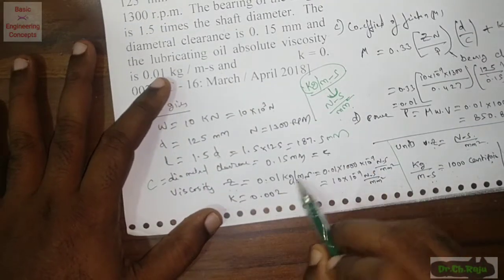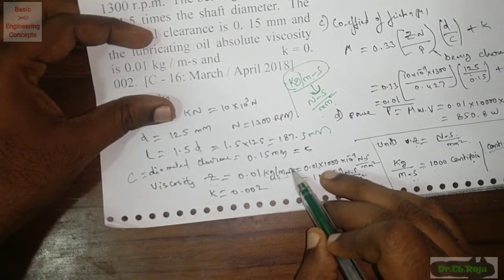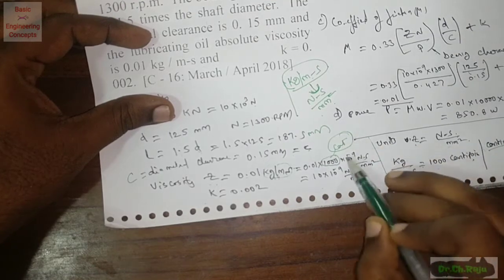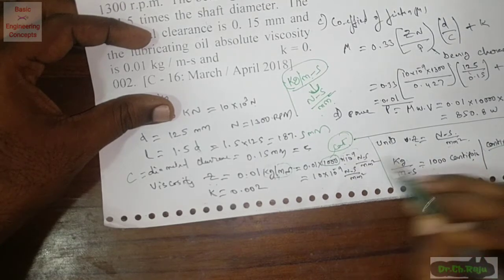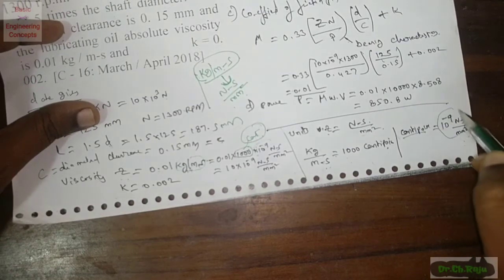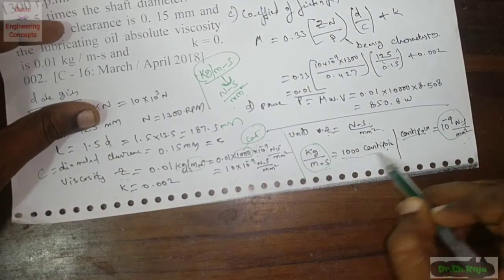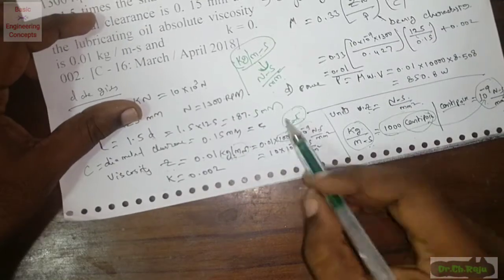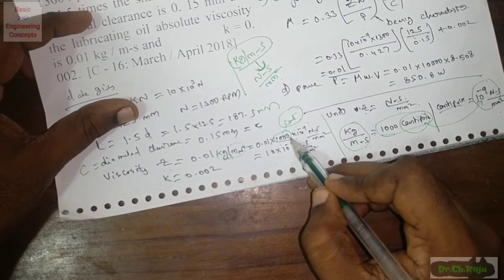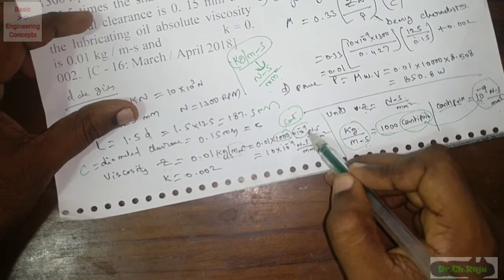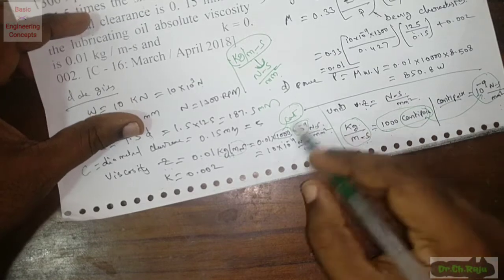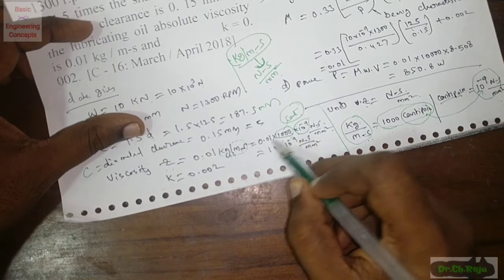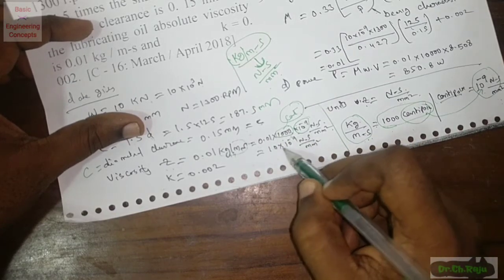Performing the viscosity conversion: z = 0.01 kg per meter second. Converting: 0.01 × 1000 centipoise = 10 centipoise. Since 1 centipoise = 10⁻⁹ newton second per mm², then z = 10 × 10⁻⁹ = 10⁻⁸ newton seconds per mm².